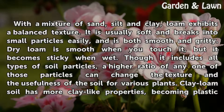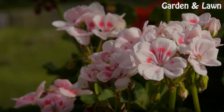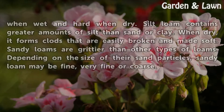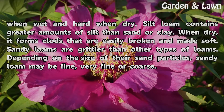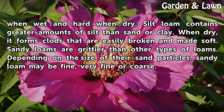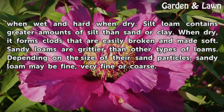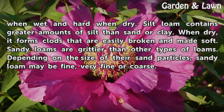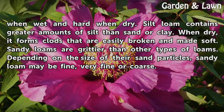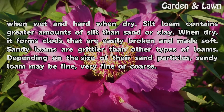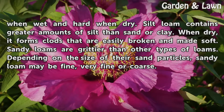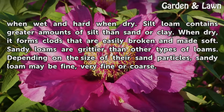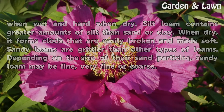Clay loam soil has more clay-like properties, becoming plastic when wet and hard when dry. Silt loam contains greater amounts of silt than sand or clay. When dry, it forms clods that are easily broken and made soft. Sandy loams are grittier than other types of loams. Depending on the size of their sand particles, sandy loam may be fine, very fine or coarse.